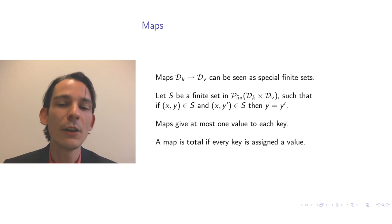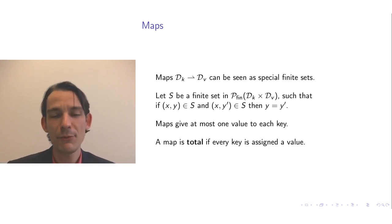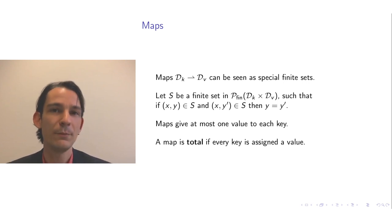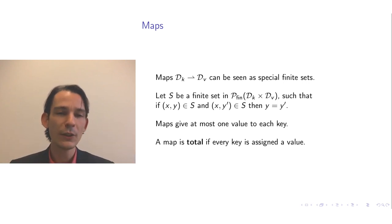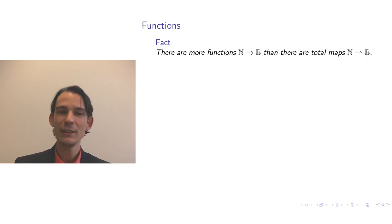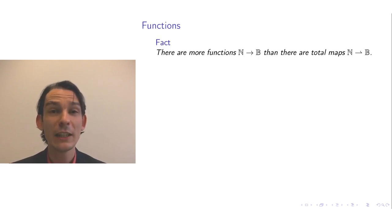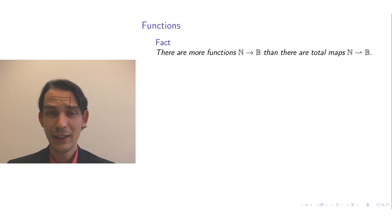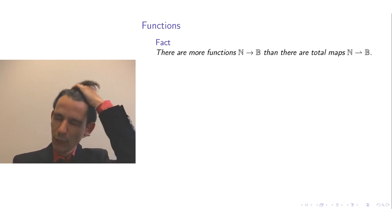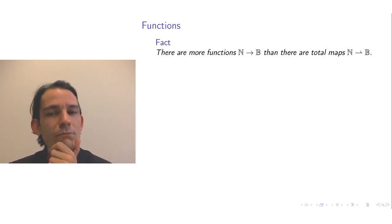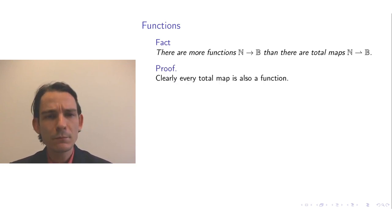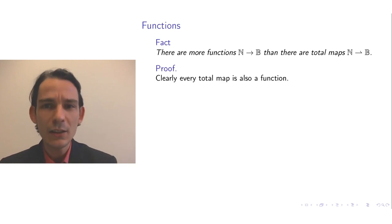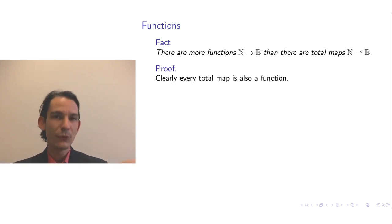Now, what is the difference between maps and functions? Consider the following claim: there are more functions from natural numbers to booleans than there are total maps from natural numbers to booleans. Let's see the proof. A total map from natural numbers to booleans can be seen as a function, since every key has an associated value — the function's result is precisely the lookup in the map. But is the opposite also true? Can every function be treated as a total map?